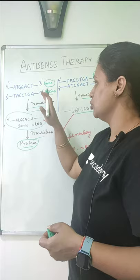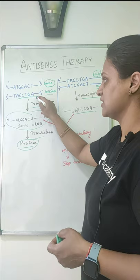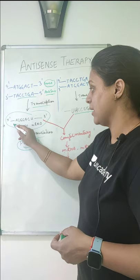Suppose this is our template, our DNA strand. The anti-sense strand acts as a template strand, and this is the sense strand. So when we use the anti-sense template for transcription, we will make mRNA and translate it into a protein.